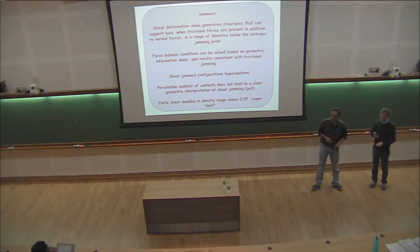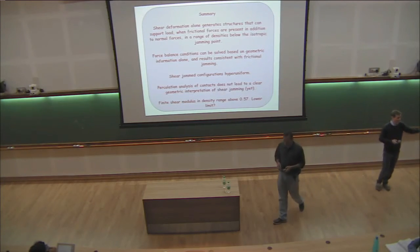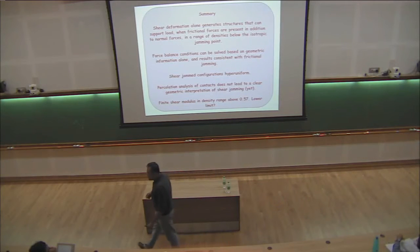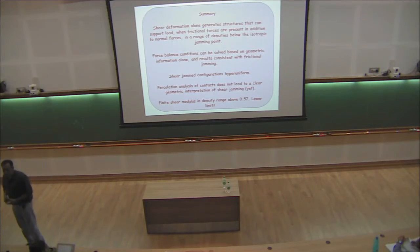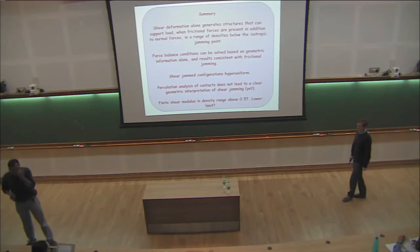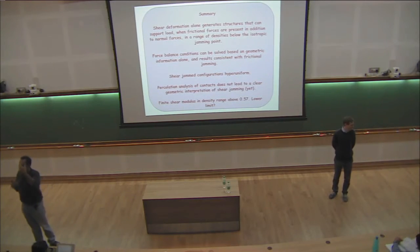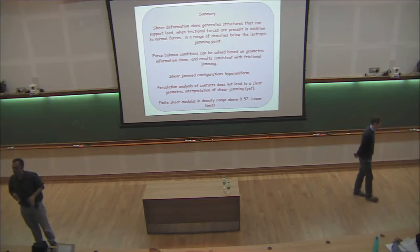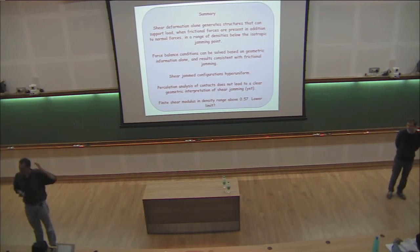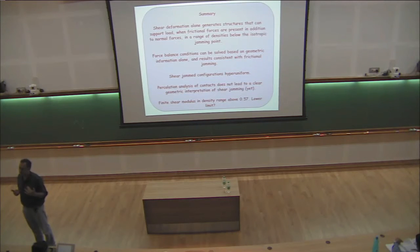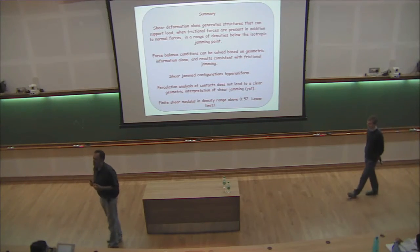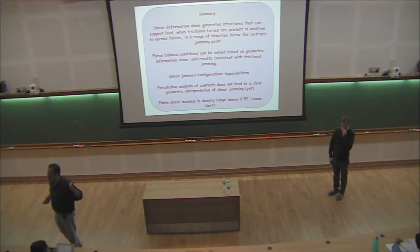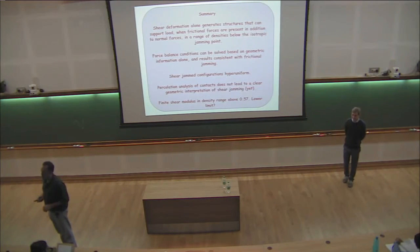One question: Do you see hyperuniformity for all values of density? Which regime? This is not very clear. I didn't have time to explain fully. We do see that above 55%, but at the highest density we look at, it's clear enough. At lower density, it's not clear whether we are seeing hyperuniformity or not. We're working on this, but at least at 0.63, which is not really close to the isotropic jamming point, we see hyperuniformity.